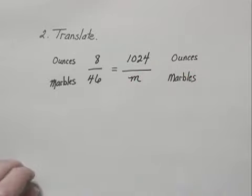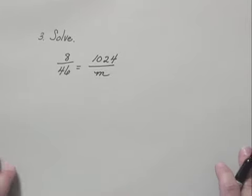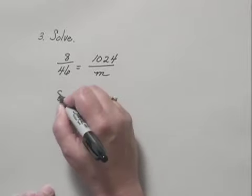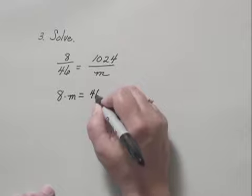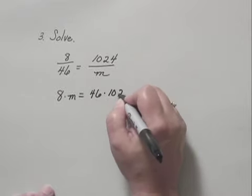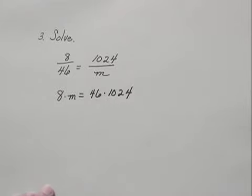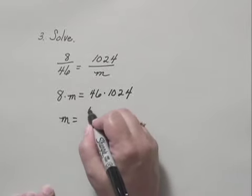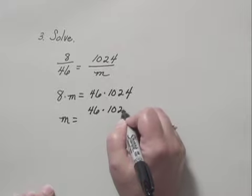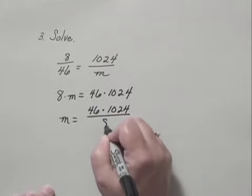We've translated to a proportion, so let's solve. We solve by equating cross products. We have 8 times M equals 46 times 1024. And we divide both sides by 8, and we have M equals 46 times 1024 divided by 8.